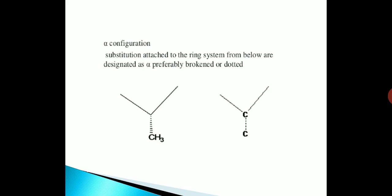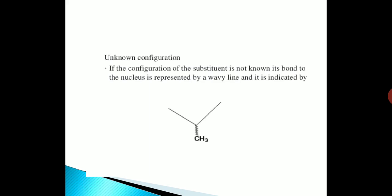Alpha configuration: substituents attached to the ring system from below are designated as alpha, preferably shown by a broken or dotted line.